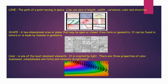Line — the path of a point moving in space. Line can vary in length, width, curvature, colour and direction. As you can see in this block, there are all different kinds of lines. You can see zigzag lines, you can see squiggly lines, you can see crisscross lines. These lines form the edges that you draw in any picture.